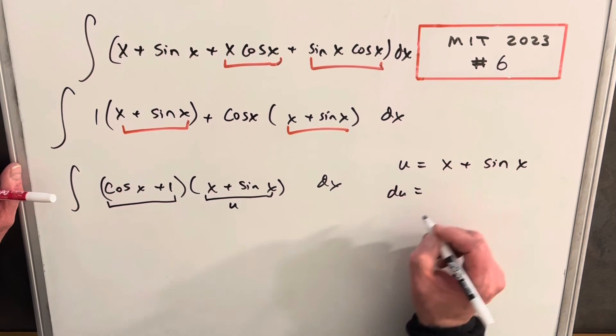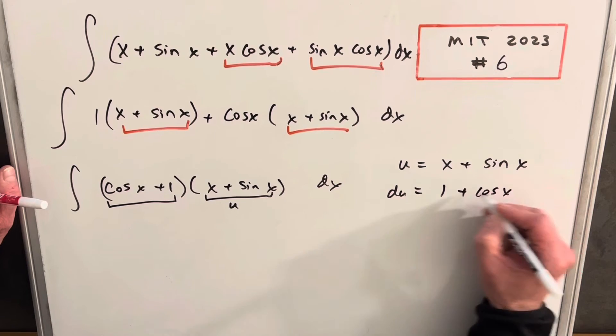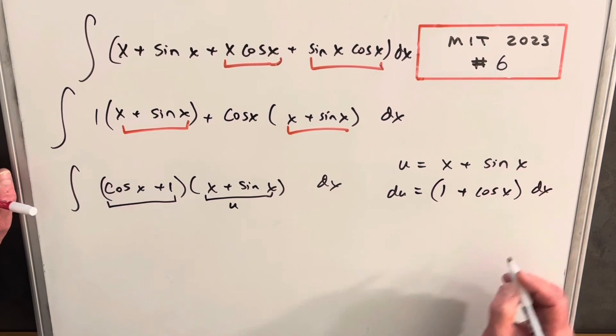I'm going to make my u equal to x plus sine x. We'll take our derivative, so du is going to be one plus cosine x dx, which is that, just in a different order.